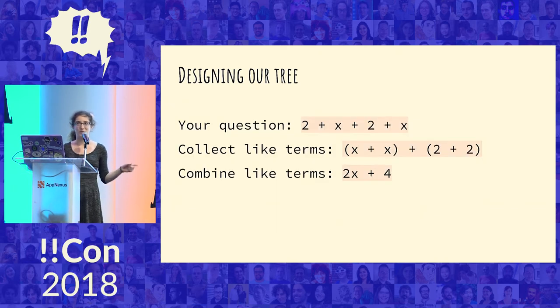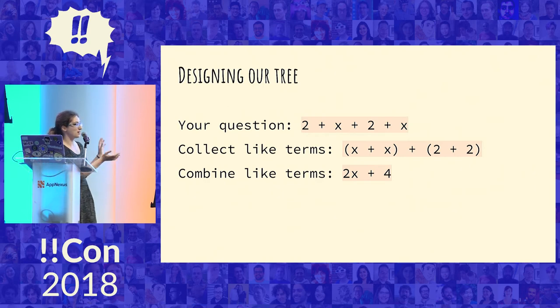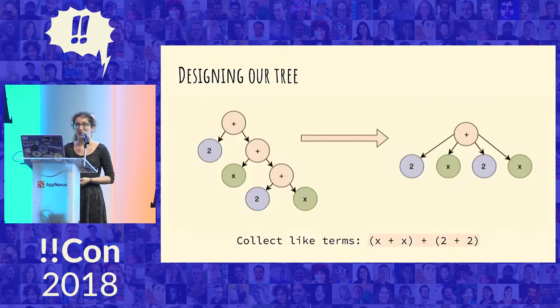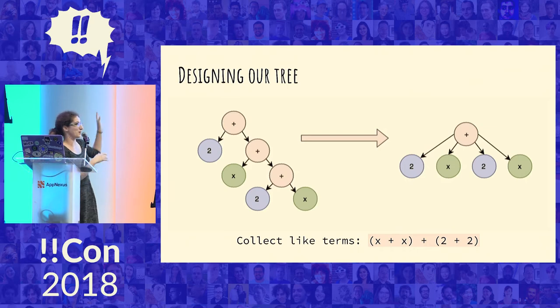And it's useful for things like this where you want to collect and combine like terms. So like, oh, look, there are two x's. We can add those things together. That's pretty useful in algebra and simplifying expressions. And it turns out it's way harder to do that when they're all spread out in the tree. But if they're all the same child of the same plus node, then it's a lot easier to find those things to collect and combine together.